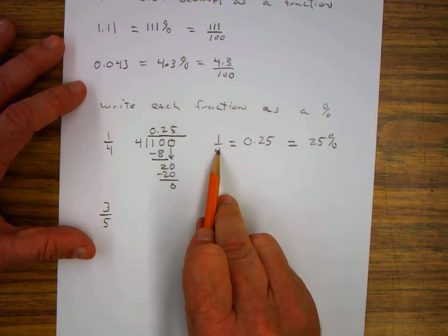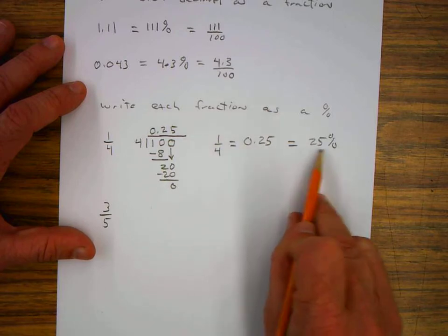So we know that 1 fourth is equal to 0.25, which is equal to 25 percent.